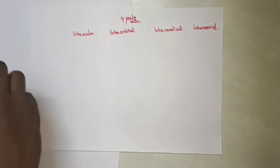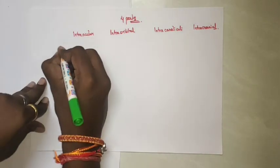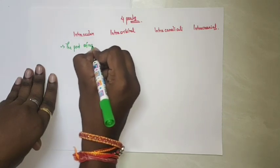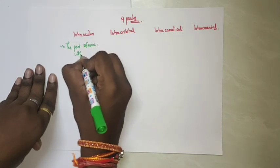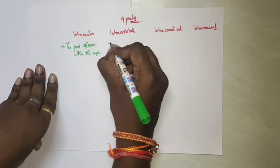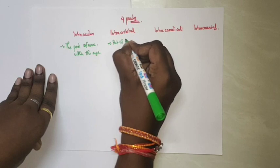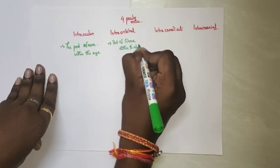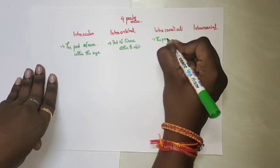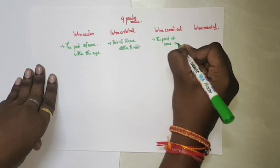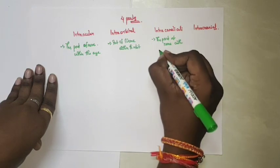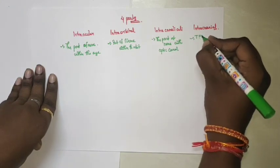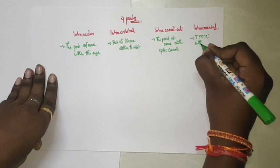To summarize: the intraocular part is the part of the nerve within the eye, the intraorbital part is the part of the nerve within the orbit, the intracanalicular part is the part within the optic canal, and the intracranial part is the part of the nerve within the cranium.